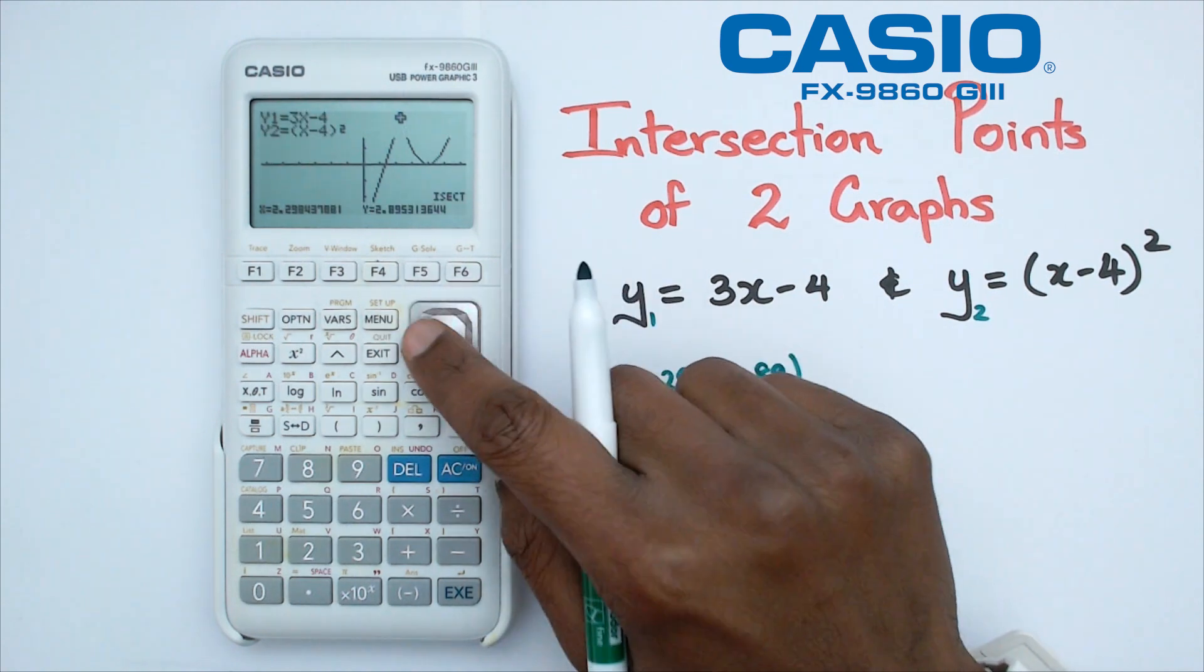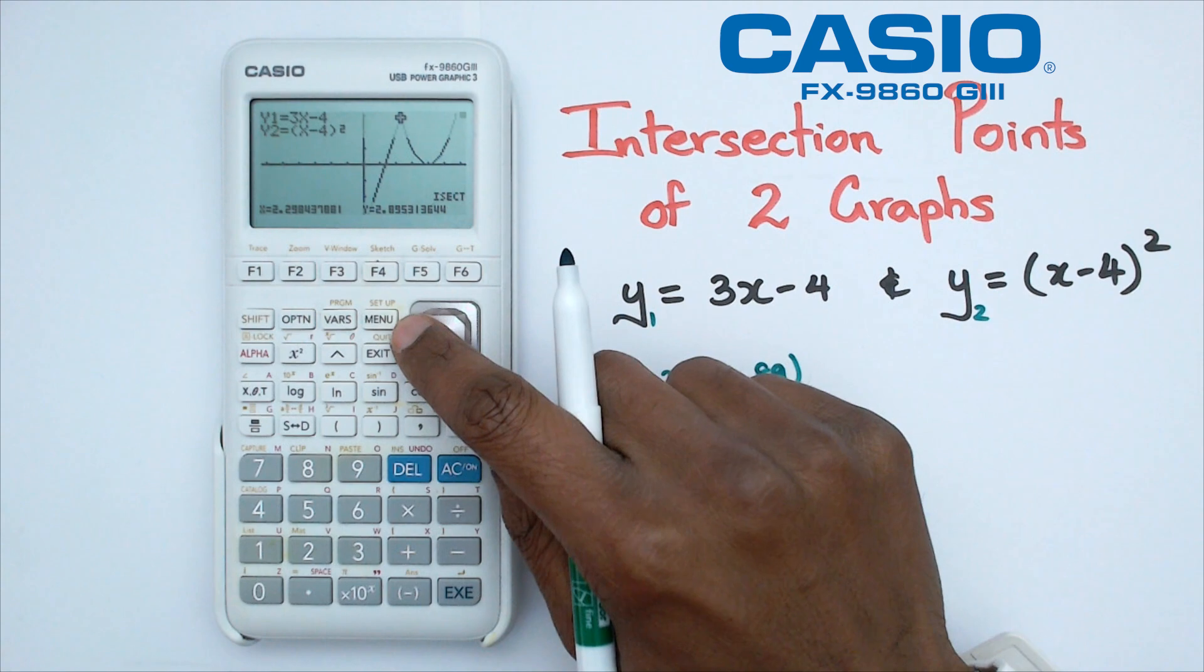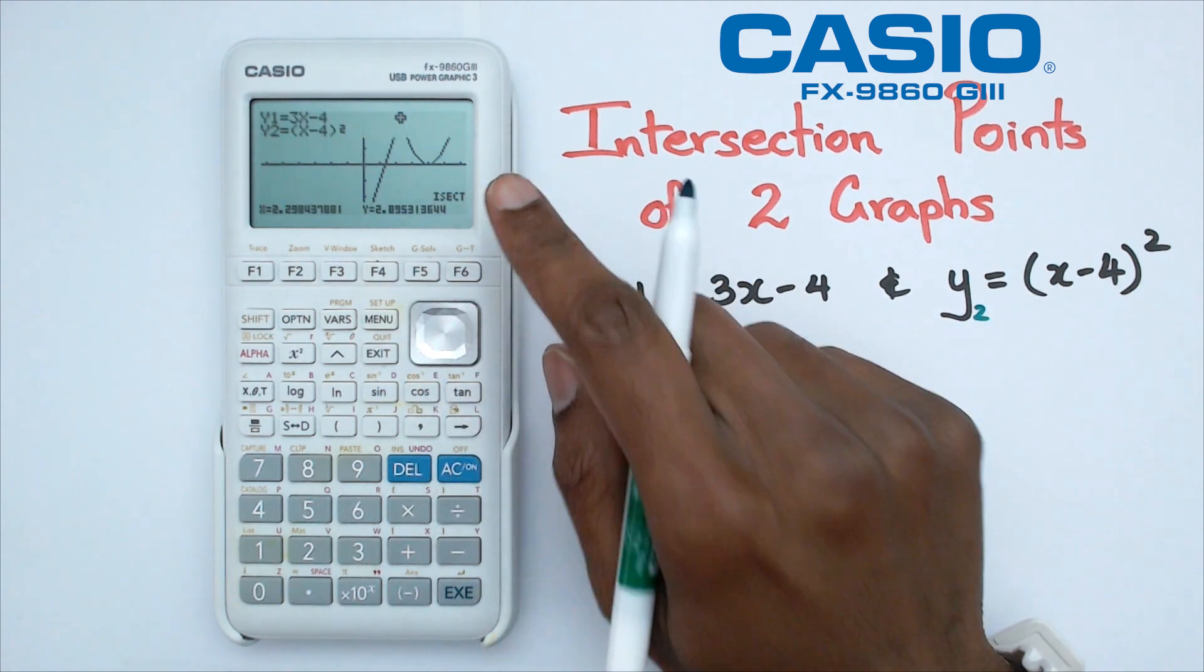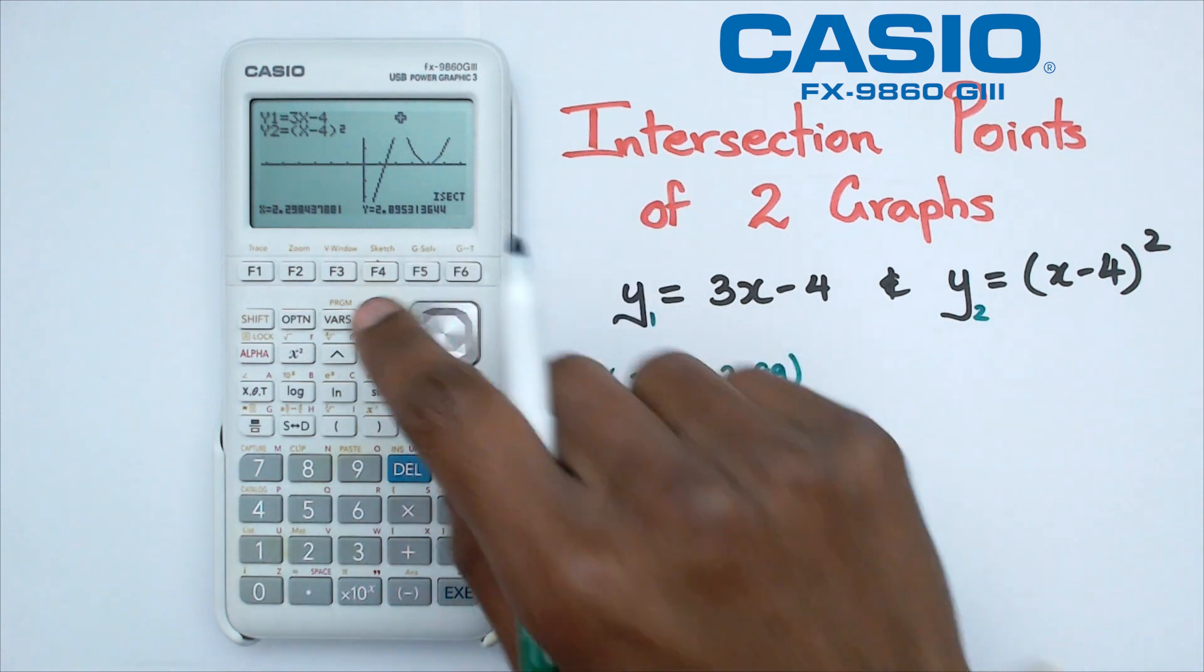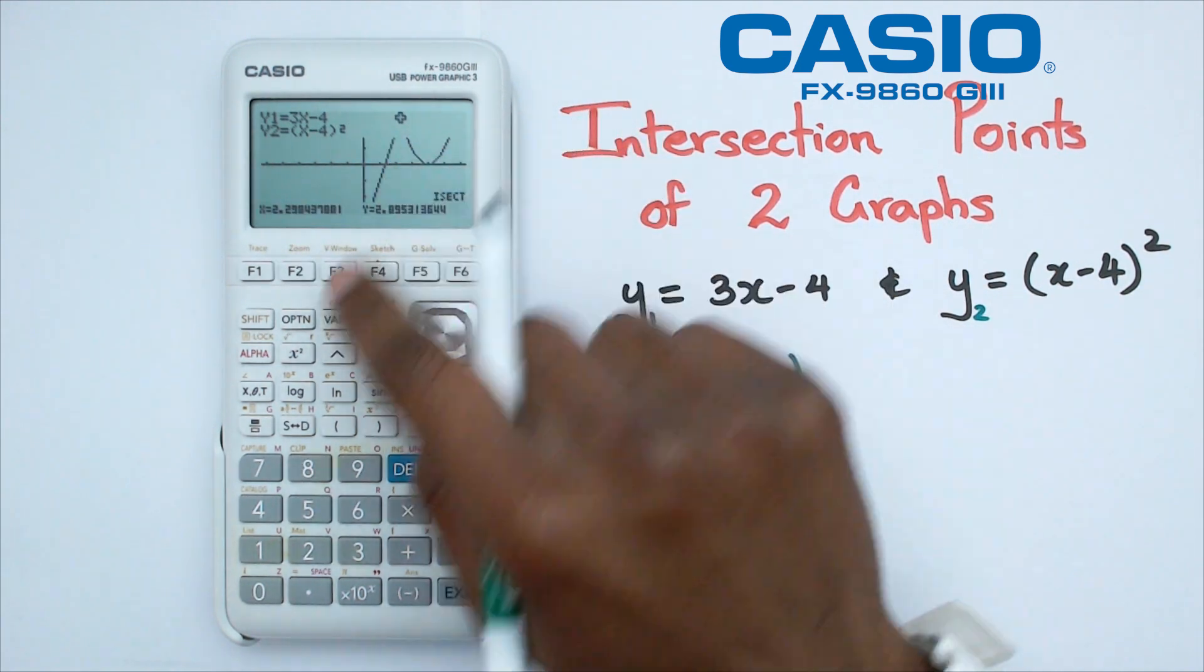Now, as you can see, what's happening here is that it's only giving me one intersection point here. It's not actually giving me the second intersection point. So to kind of fix this, we're going to change the actual view window here.